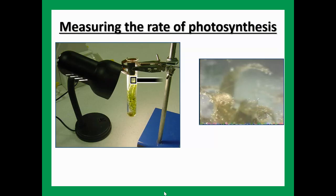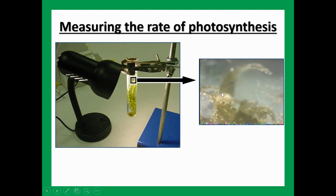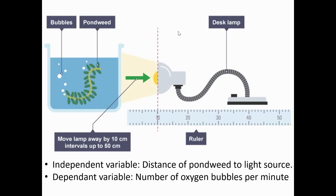Hopefully we're getting a good idea of how to do this investigation. This photograph shows that there are bubbles being produced. The dependent variable will be measured using a stopwatch and by counting the bubbles. The bubbles will lift off and float to the top — when that happens, that's when you count one. We'll have a setup where the dependent variable is the distance, and the pond weed is near the light source. The dependent variable is the number of oxygen bubbles per minute.